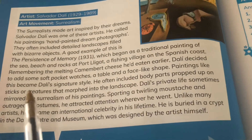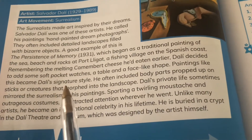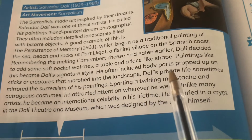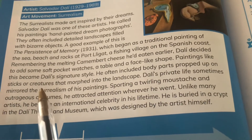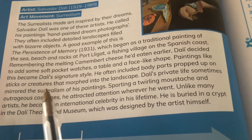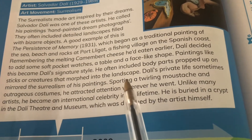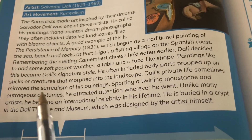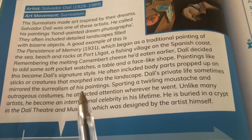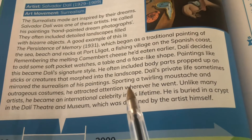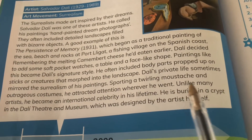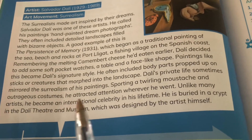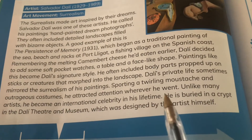Paintings like this became Dali's signature style. He often included body parts propped up on sticks or creatures that morphed into the landscape. Dali's private life sometimes mirrored the surrealism of his paintings. Sporting a twirling moustache and outrageous costumes, he attracted attention wherever he went.